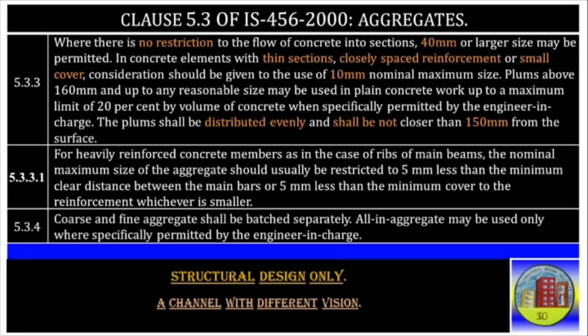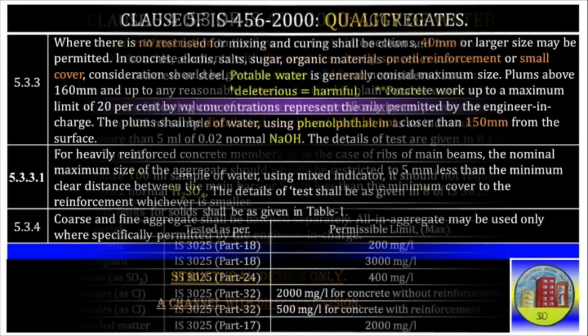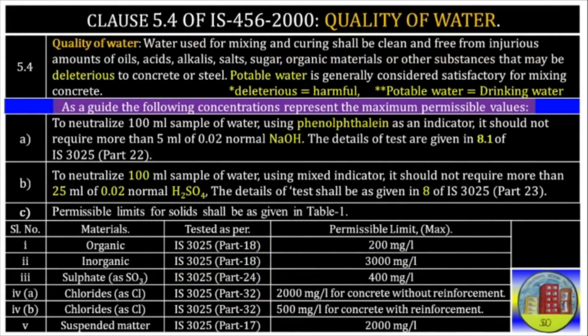Clause 5.4 of IS 456 2000 — Quality of Water: Water used for mixing and curing shall be clean and free from injurious amounts of oils, acids, alkalis, salts, sugar, organic material, or other substances that may be deleterious to concrete or steel. Potable water is generally considered satisfactory for mixing concrete. As a guide, the following concentrations represent the maximum permissible values.